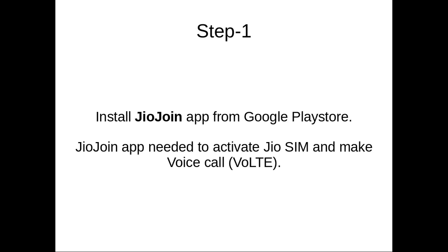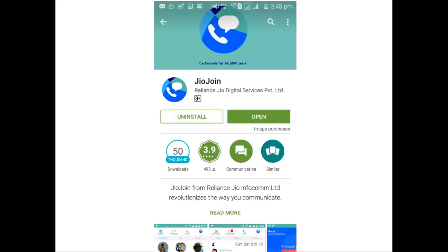First, we need to install the GeoJoin app from the Google Play Store. This GeoJoin app is required to activate the GeoSIM and make voice calls. You can download and install the GeoJoin app from the Google Play Store.